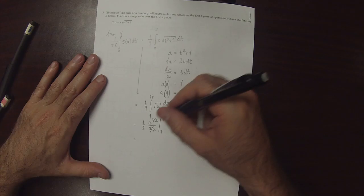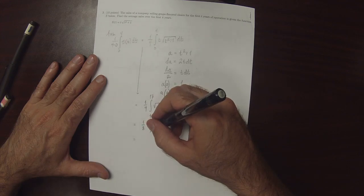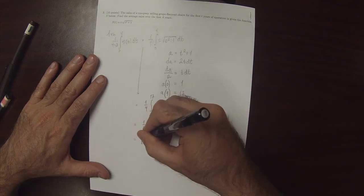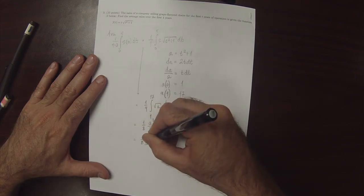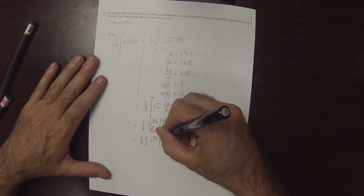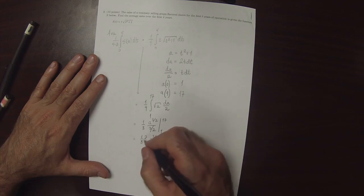I'll combine these constants. Division by 3 halves is multiplication by 2 thirds, and 2 thirds multiplied by 1 eighth. So 1 eighth times 2 thirds, there's a cancellation, and we get 1 twelfth.